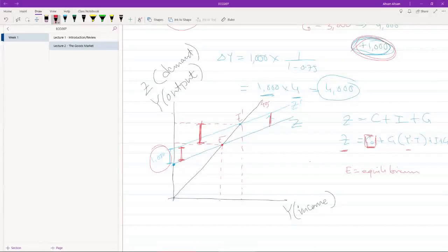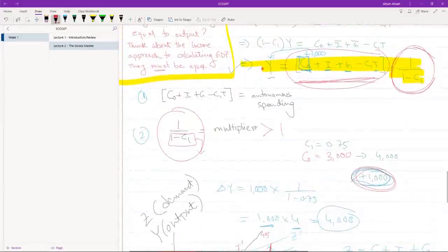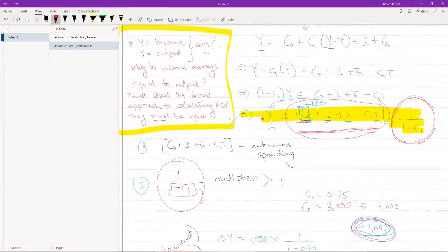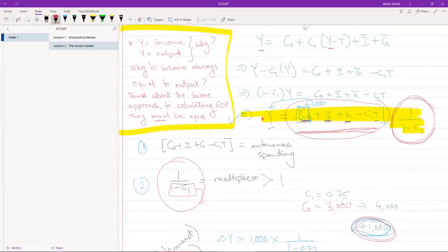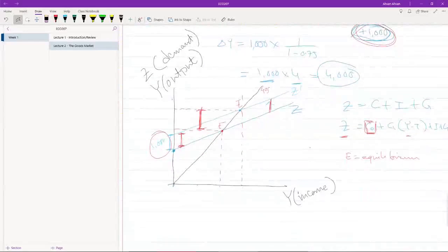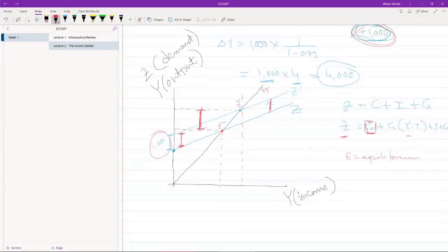So this is basically the graphical representation of what we were talking about: if any one of these things - if consumption or investment, government spending or taxation - if any part of our autonomous spending were to change, the actual change on the economy will be much larger. In this example, consumption had gone up by a thousand. Investment could have gone up by a thousand, or the government could have started to spend more by a thousand.